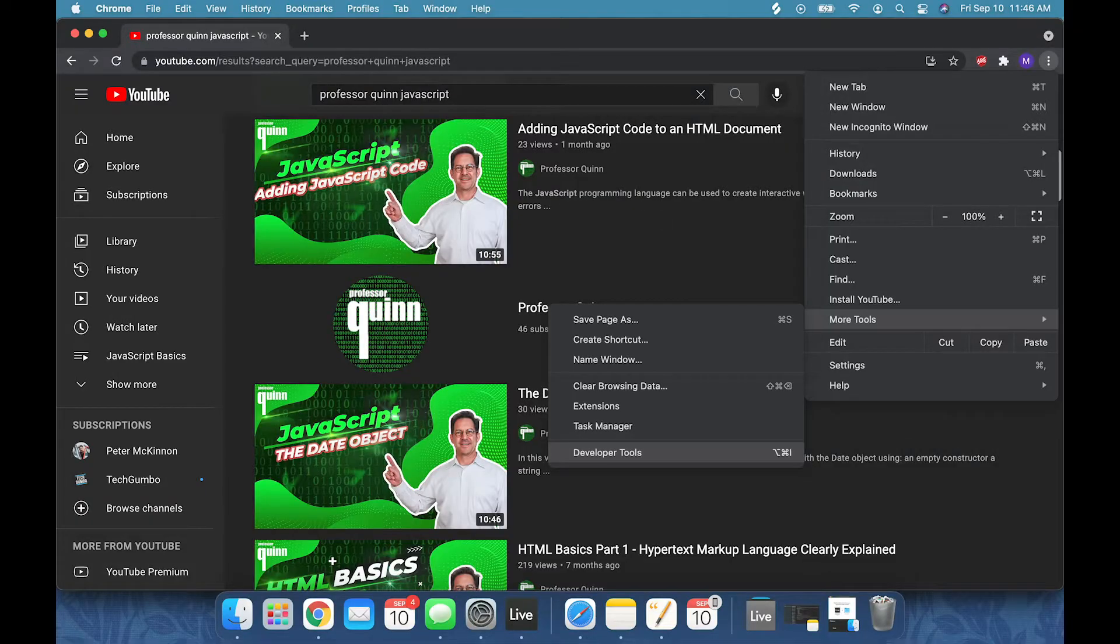It's extremely important to realize that these menu options and shortcut key combinations changed based on the operating system and the browser that you're using. If you're working on the Mac operating system with a Chrome browser, you could go to the kebab menu in the top right corner of the Chrome window and choose More Tools, Developer Tools.